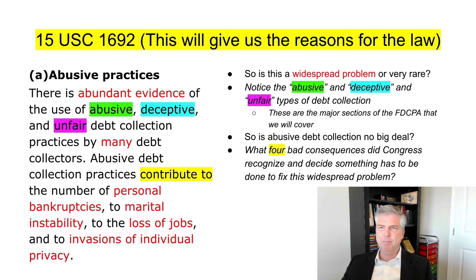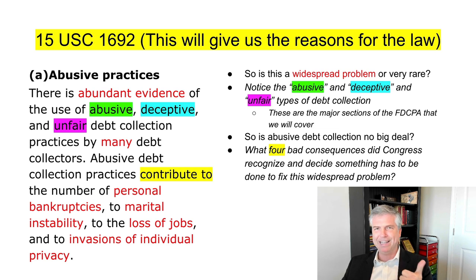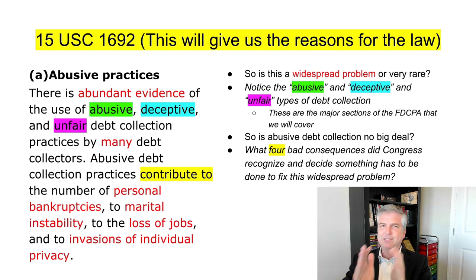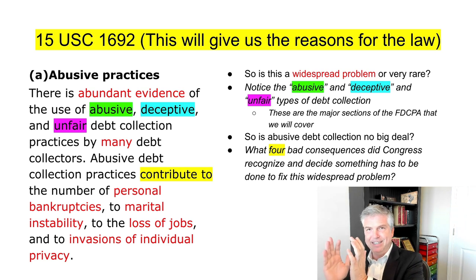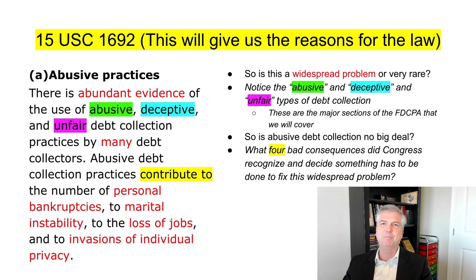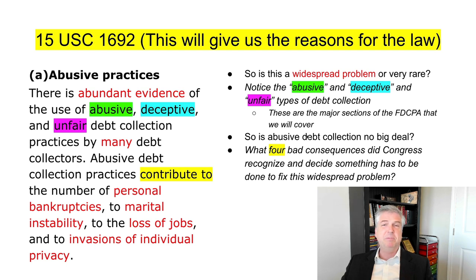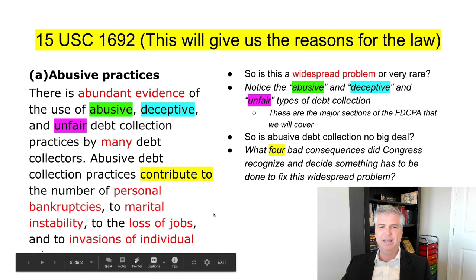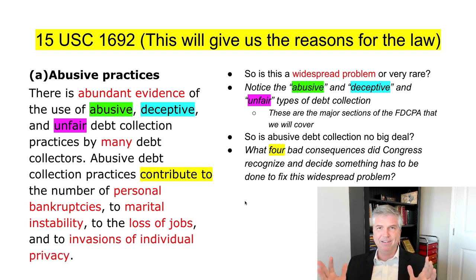Notice we have abusive, deceptive, and unfair listed here — these make up the core of the original FDCPA. There'll be a section on abusive or harassing debt collection, a section on deceptive or misleading misrepresentations, and a section on unfair conduct. That's 1692D for abusive, 1692E for misrepresentation or deception, and 1692F for unfair conduct. Abusive debt collection practices contribute to personal bankruptcies, marital instability, loss of jobs, and invasions of individual privacy. Congress tells us this is a very big deal.